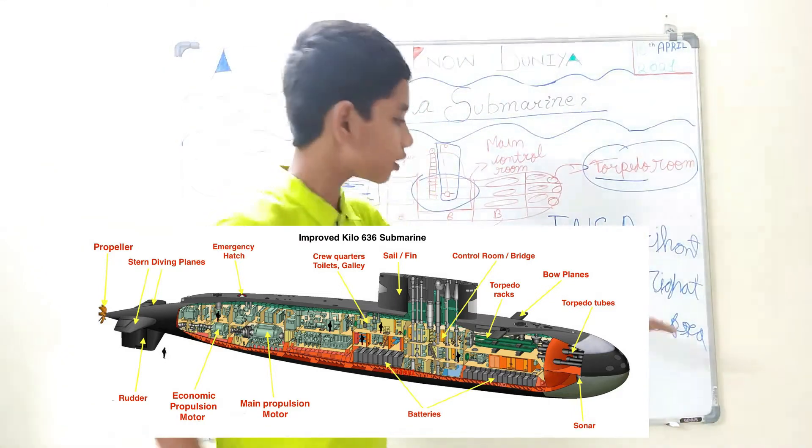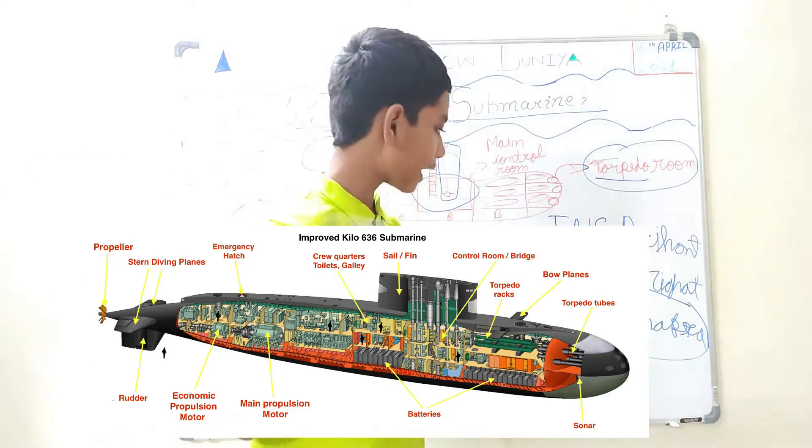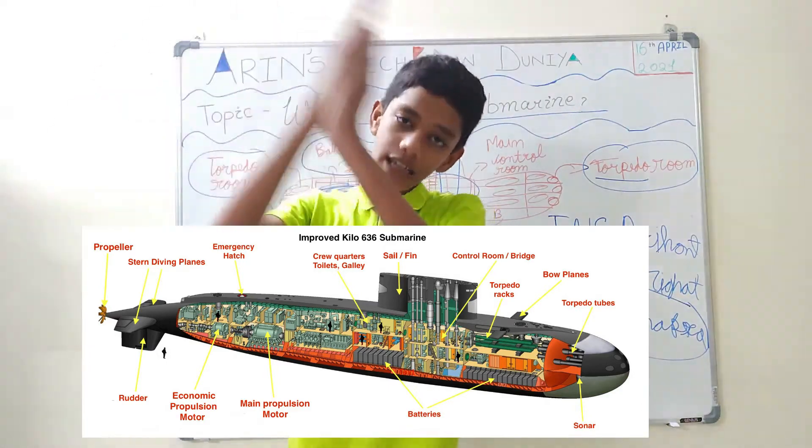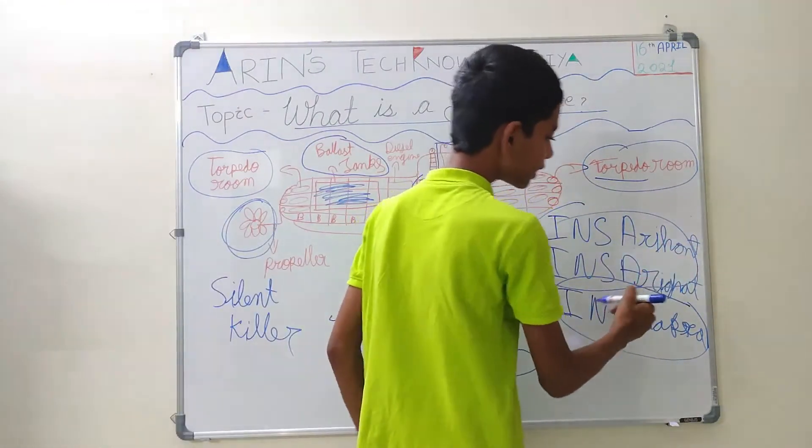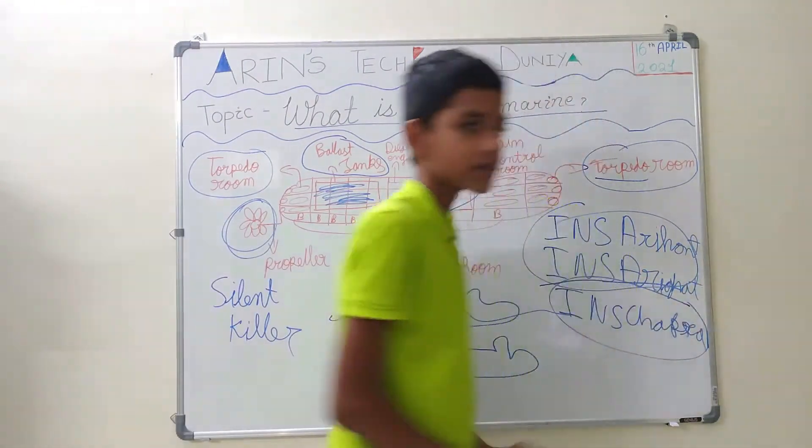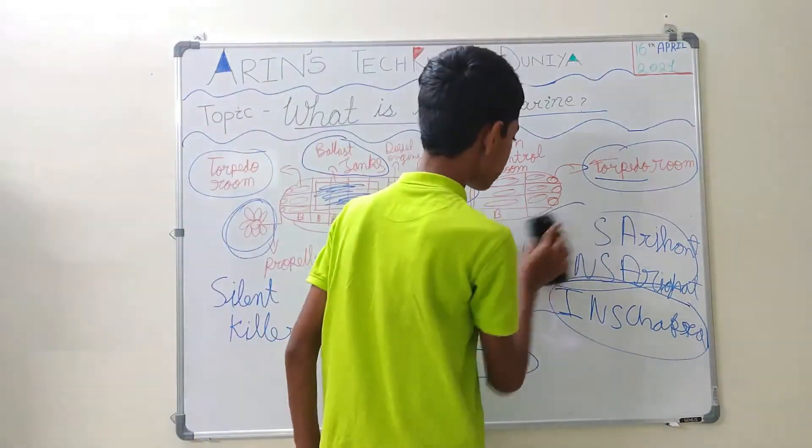These are nuclear submarines. This is taken by India from Russia in a lease of 10 years which is going to expire in 2021. India is taking another submarine in lease and it is building these two. This is already in service and this will come into service by 2021, and other two nuclear submarines are under construction by India.